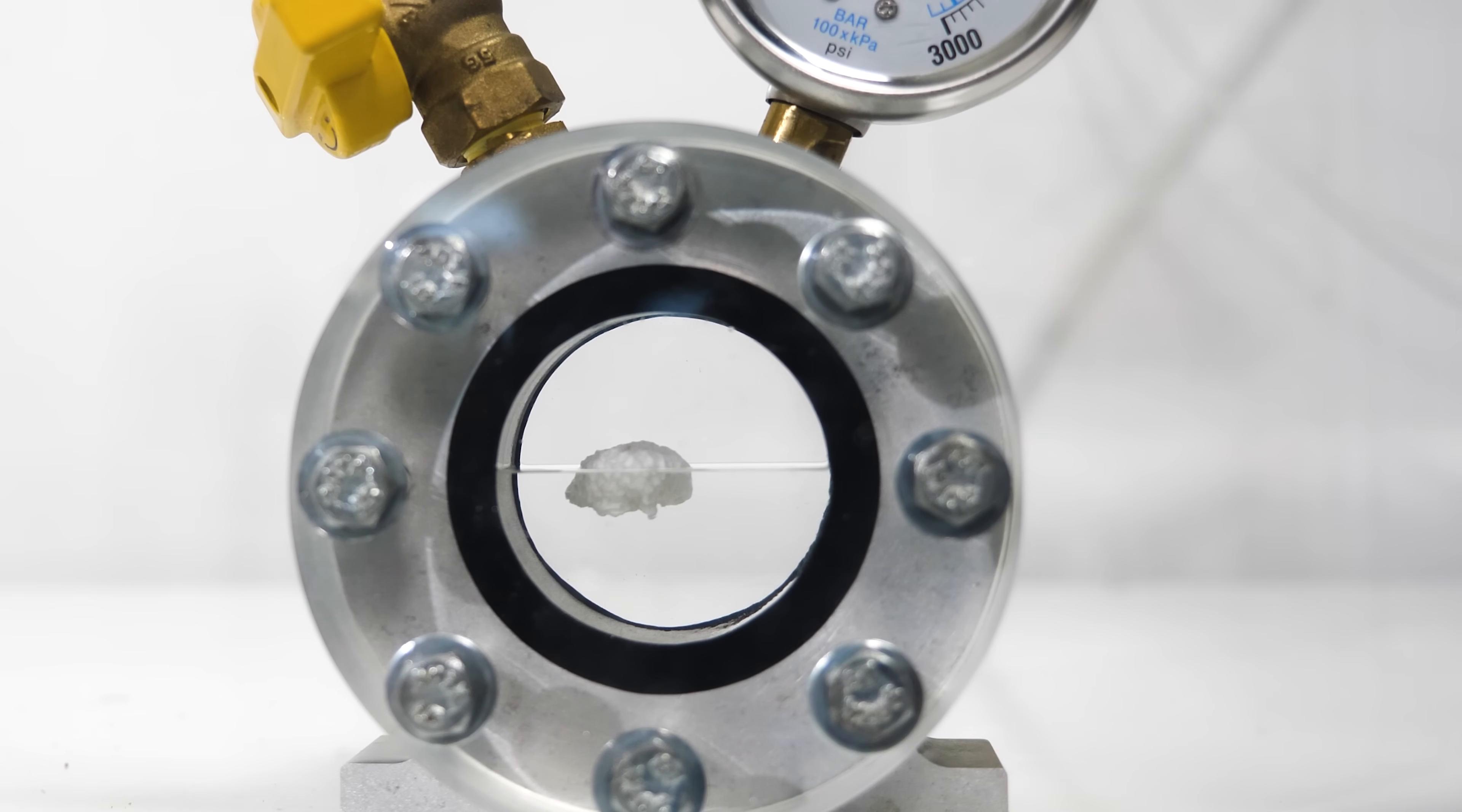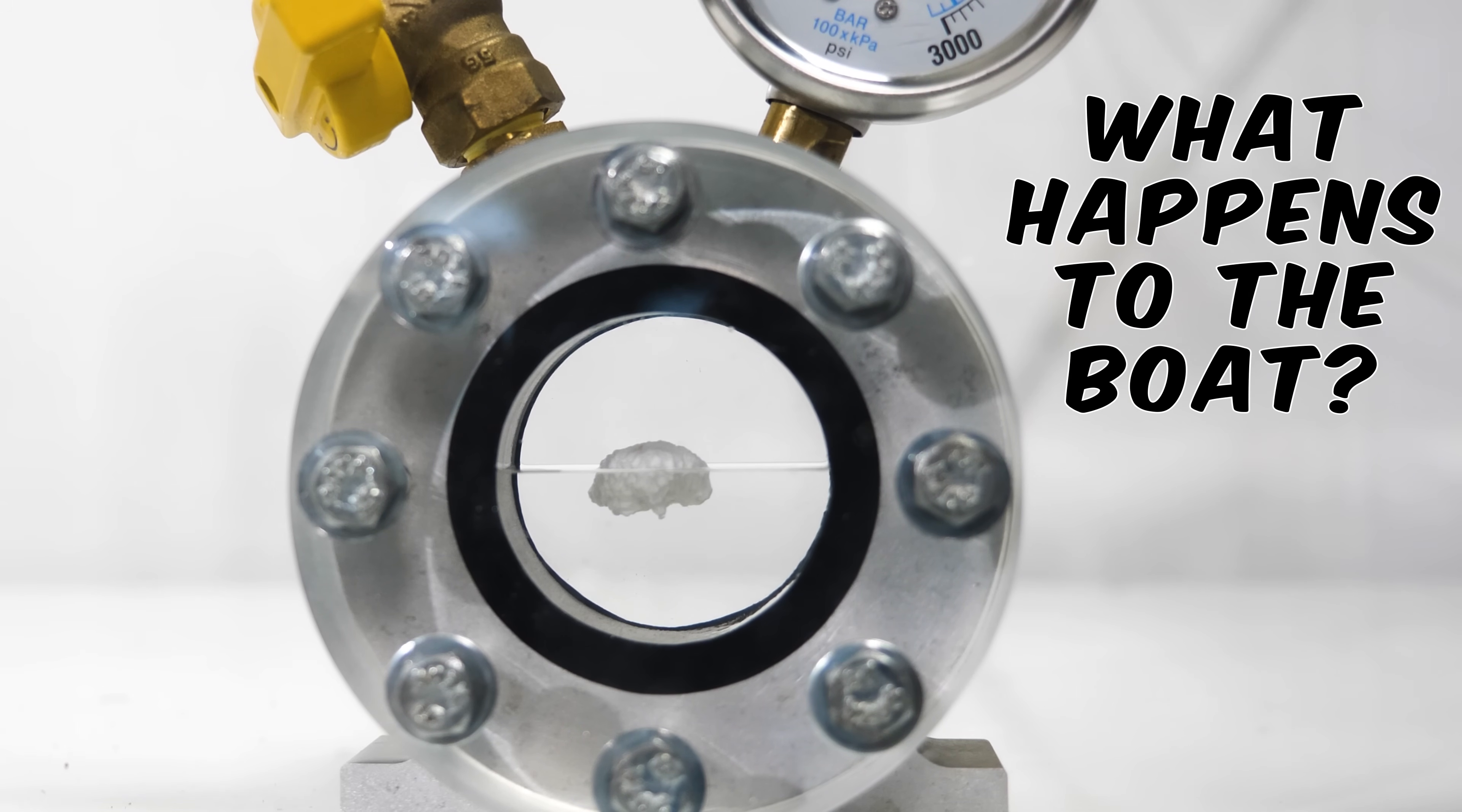But this gave me an idea and raised a question in my mind. If the line just kind of goes away, then what would happen if there was a boat floating on the surface of the liquid right when it turns supercritical? What happens to the boat?